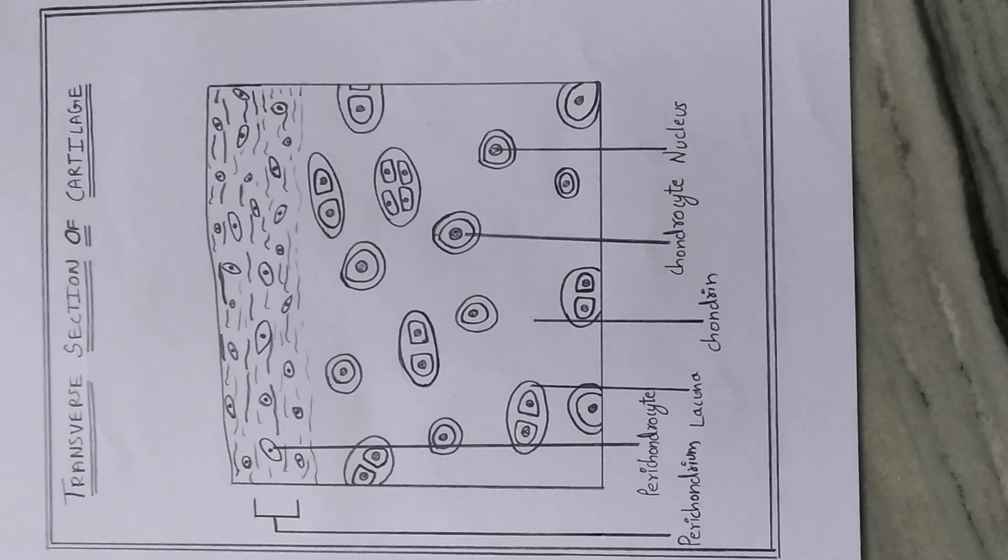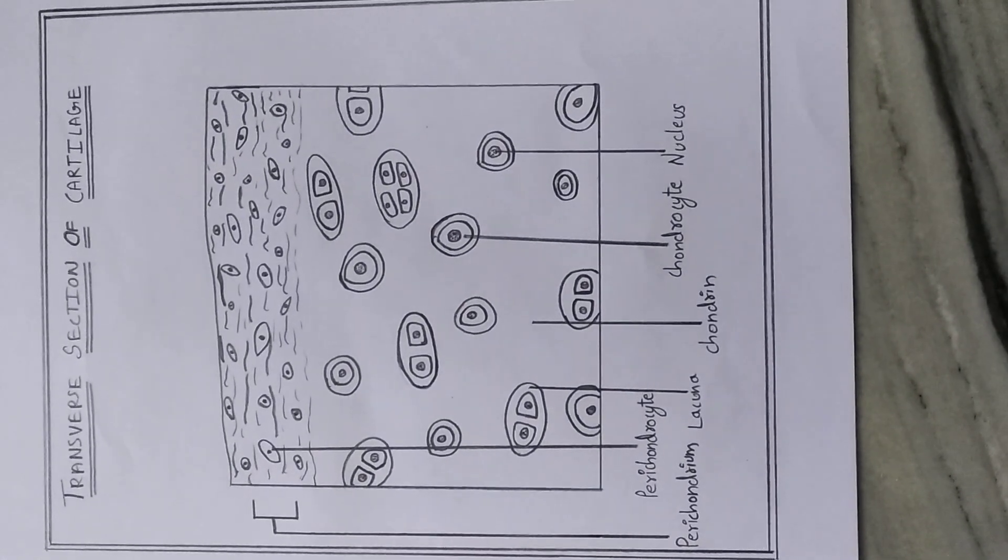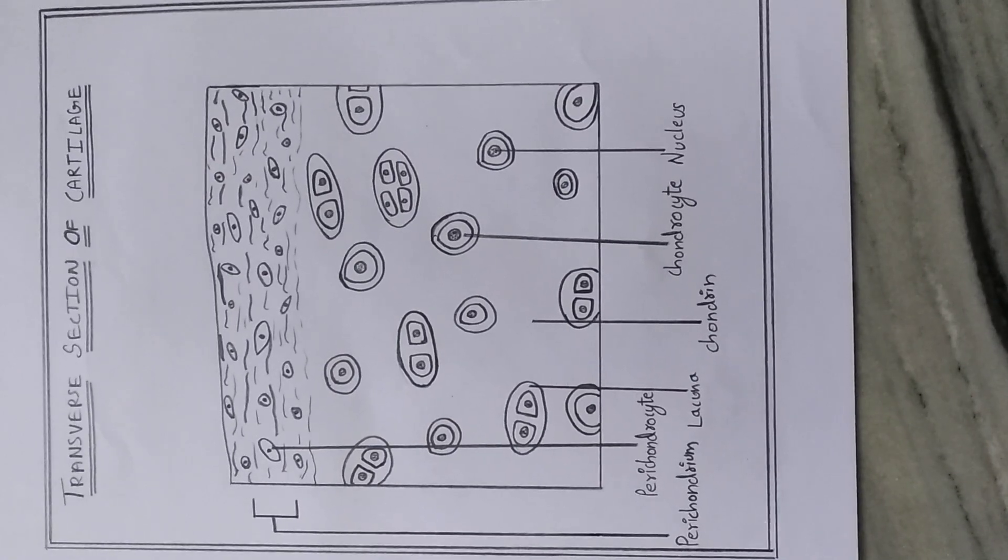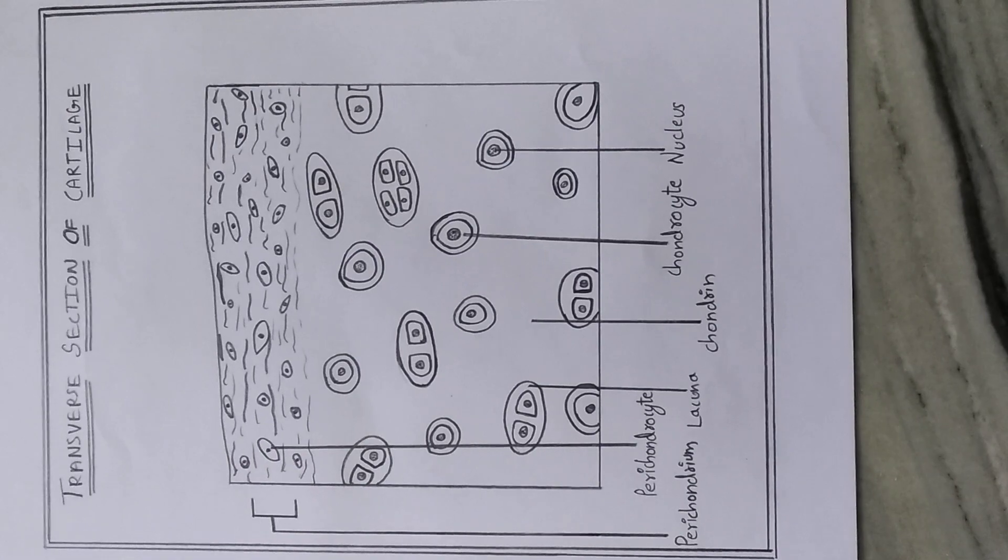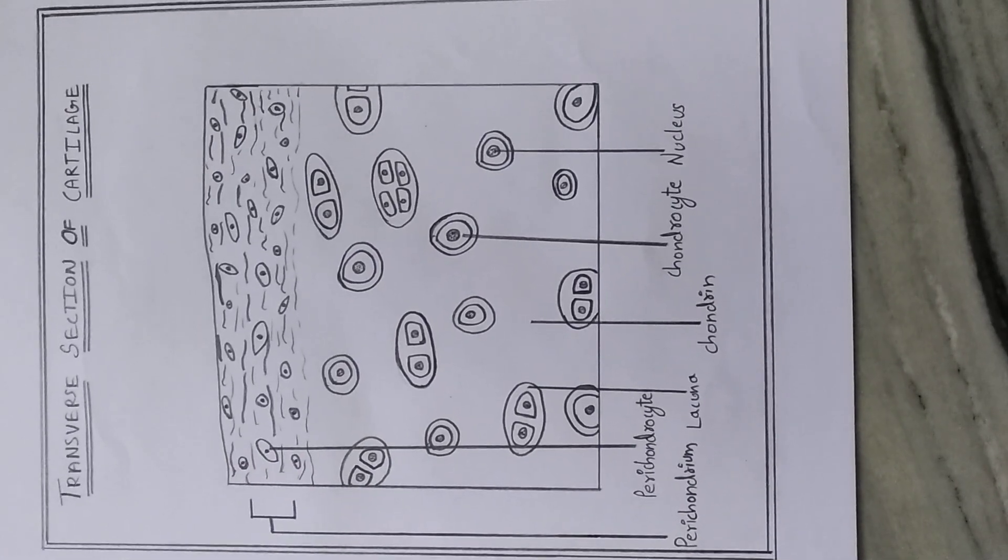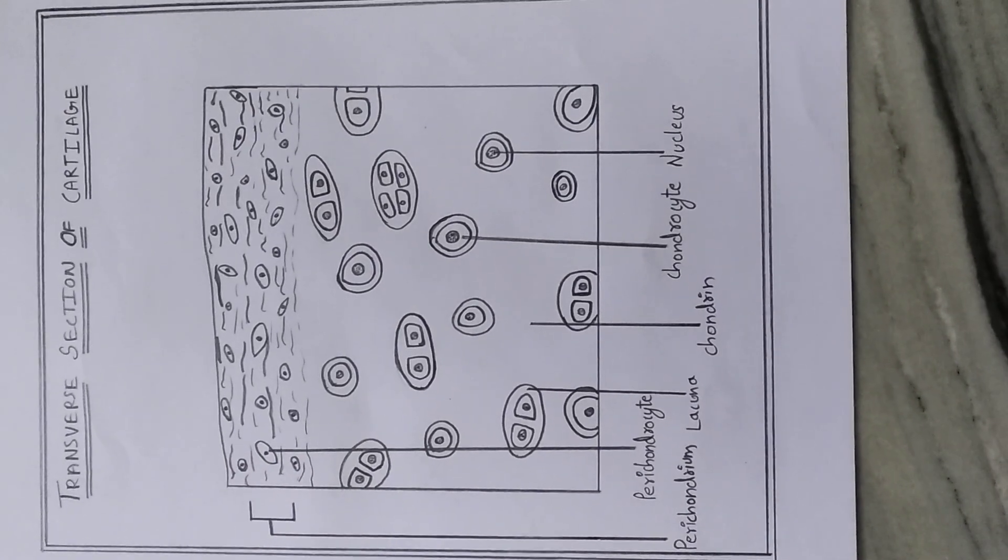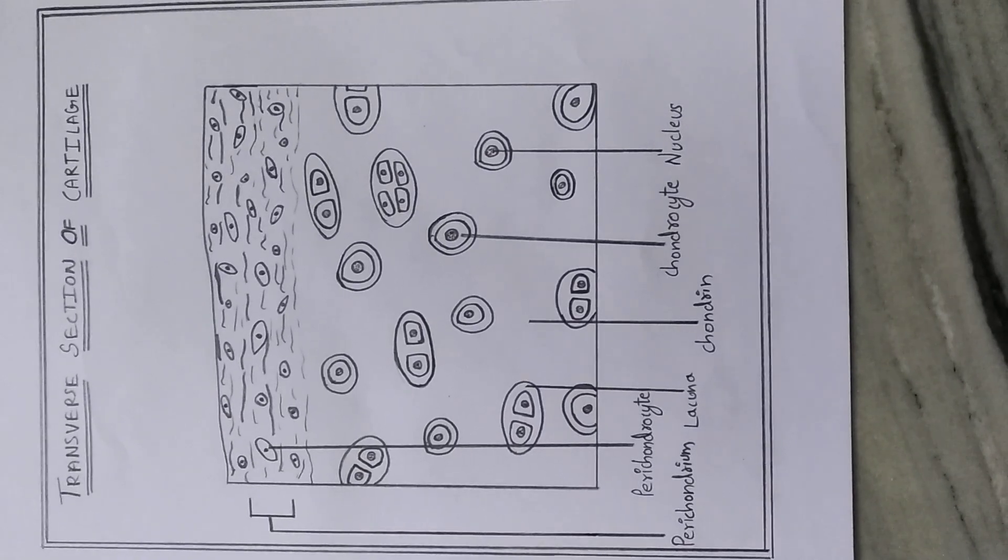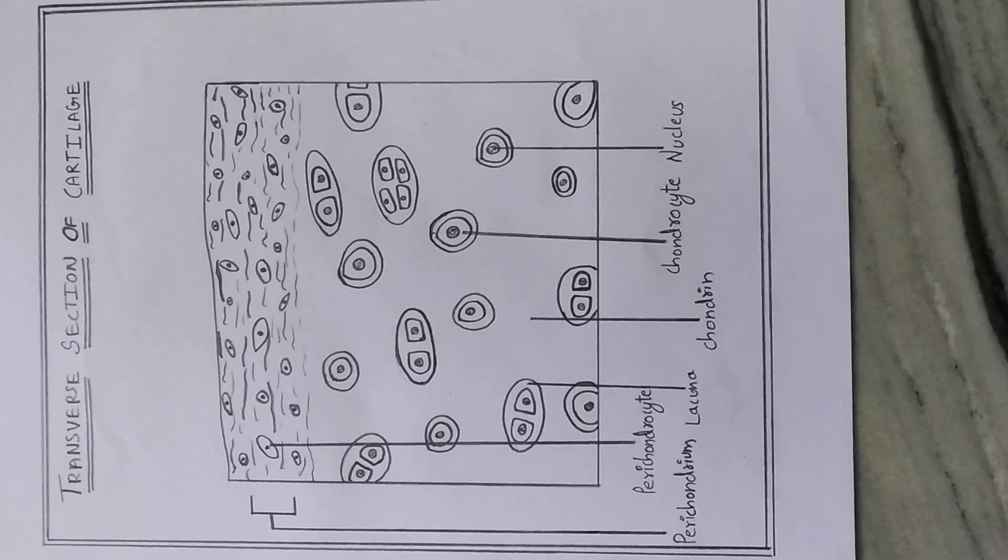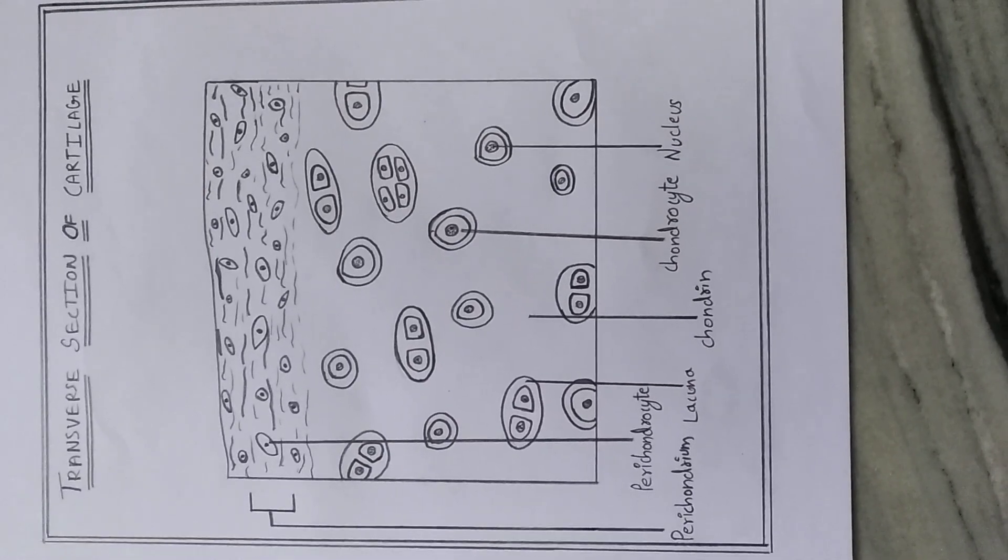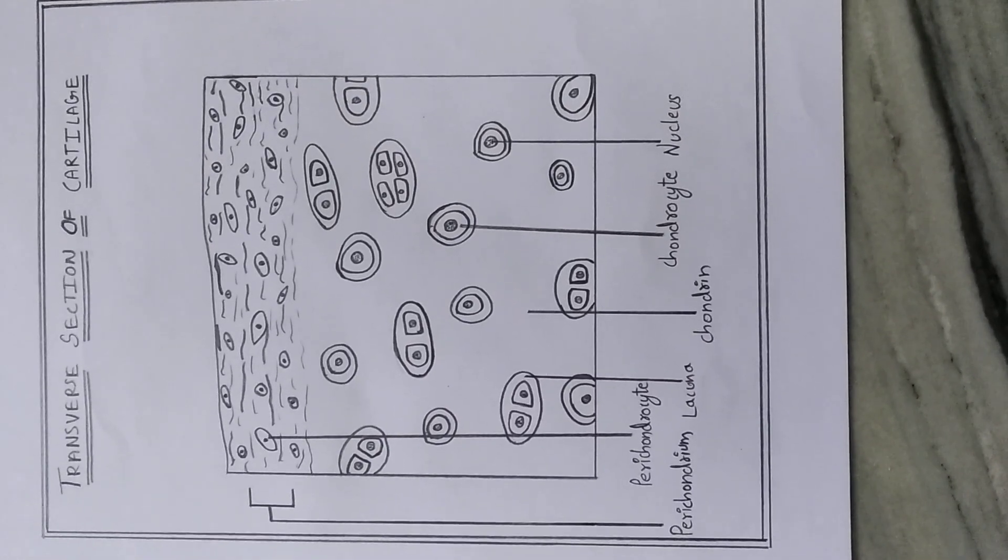The perichondrium contains blood vessels, nerve fibers, and perichondroblasts. Based on the nature of the matrix, there are three types: hyaline cartilage, elastic cartilage, and fibrous cartilage. The most abundant cartilage is hyaline cartilage.